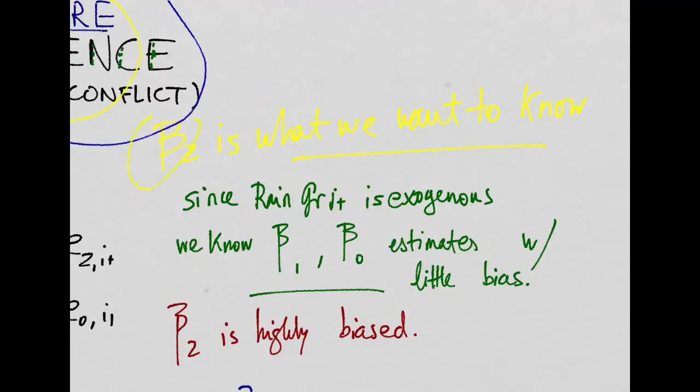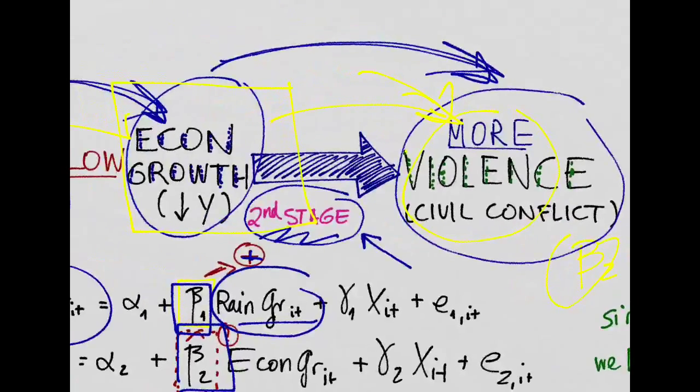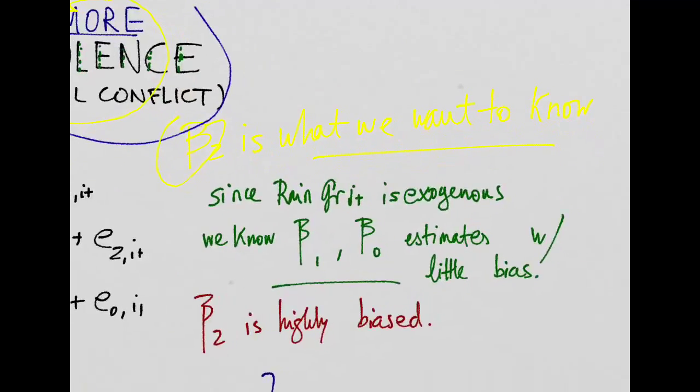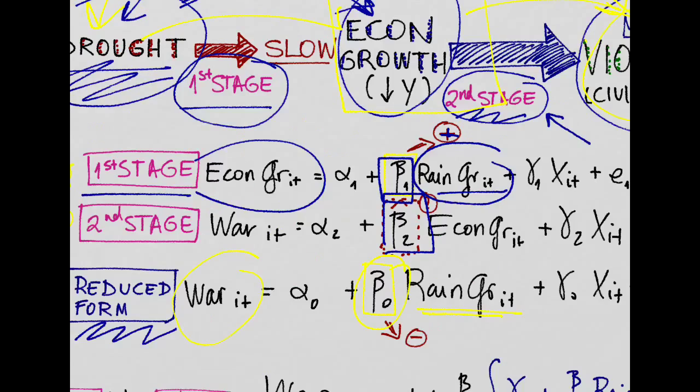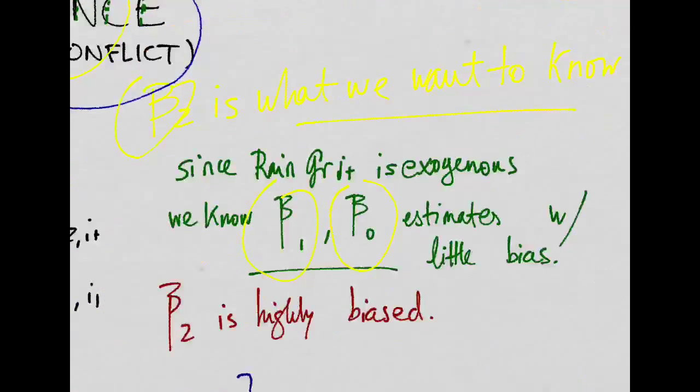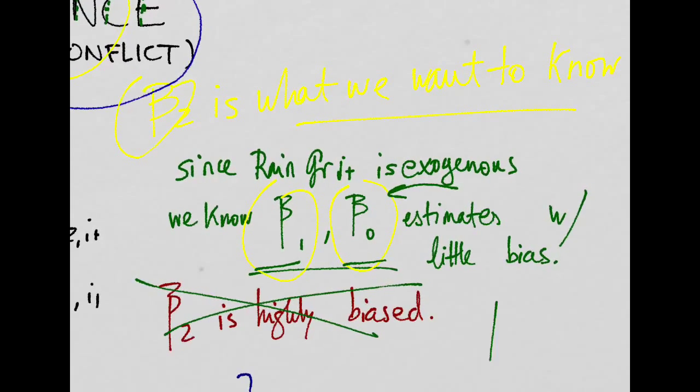Now, beta 2, which is basically the impact of economic growth on civil conflict, is what we want to know. But what we actually know, or at least we can estimate it with a really small bias, is beta 1 and beta 0 coming from the first stage and coming also from the reduced form, using the fact that rainfall growth is an exogenous variable, our instrument. And thus we can construct a beta 2 that is not biased anymore, just by getting a function of beta 1 and beta 0 that is basically beta 2, the impact of economic growth in civil conflict.